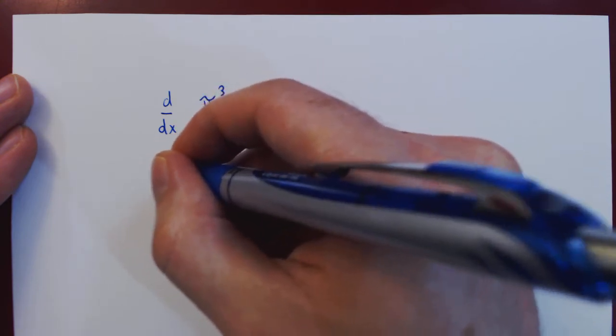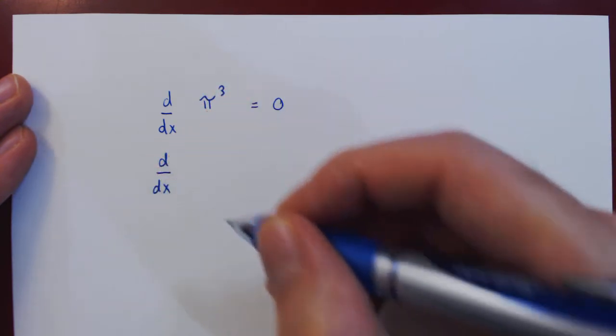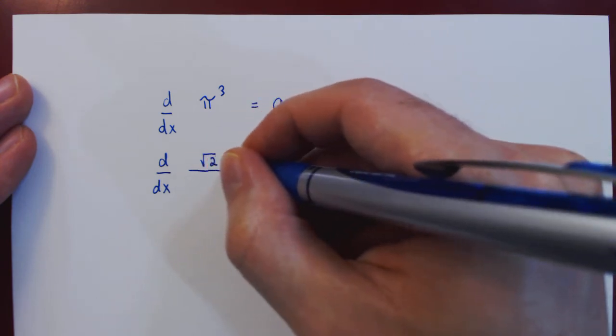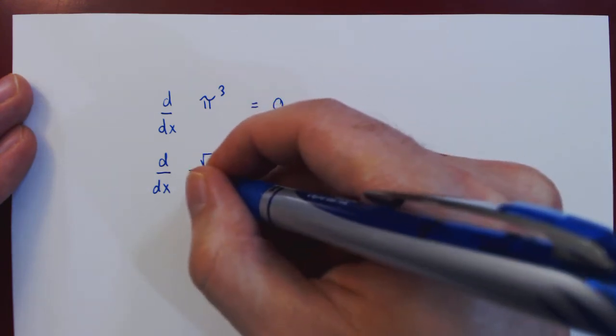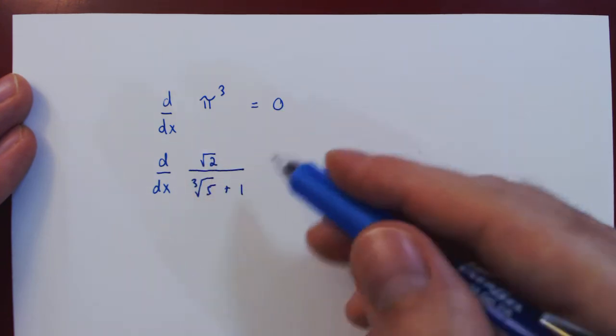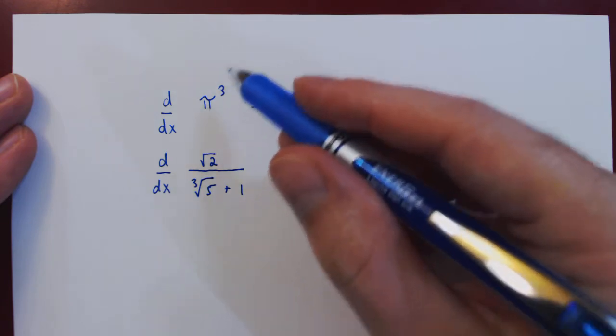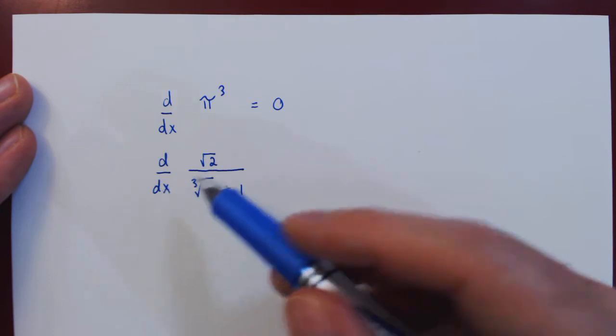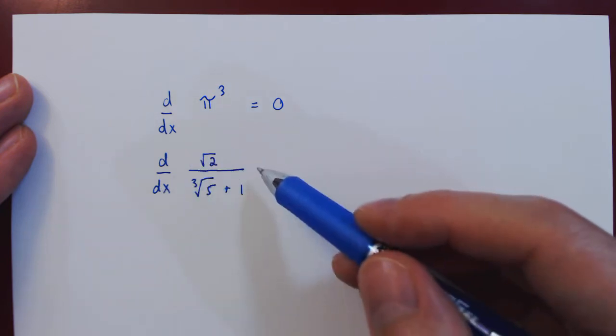What if we make the expression seemingly more complicated? Let's take the square root of 2 divided by the cube root of 5 plus 1. Now this looks more complicated than π cubed, but again, we differentiate with respect to the variable x. If you notice in this quotient, there is no variable x.